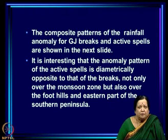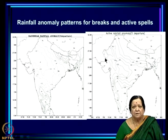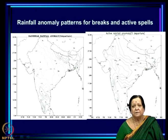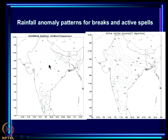The composite patterns of rainfall anomaly for GJ breaks and active spells show that for the break you have entirely negative anomalies over the monsoon zone, and for active spells entirely positive anomalies. Over the southeast part of the peninsula and over the foothills of the Himalayas there is a reversal of sign. It is very interesting that given this definition, the active spell rainfall anomalies are a mirror image of the break anomalies with all the signs changed to the opposite, including for the foothills.